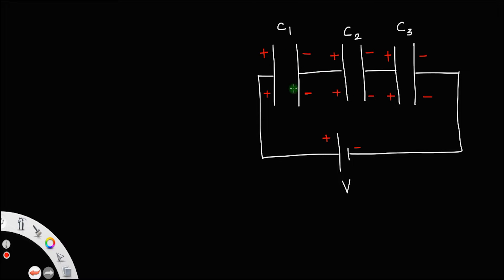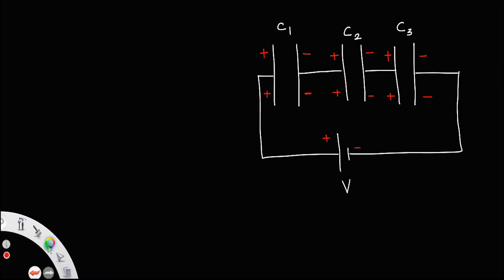This is called the series combination of capacitors because the negative plate is connected to the positive plate of the adjacent capacitor. This kind of combination is called the series combination. Also, you can see that all these capacitors have two units of positive charge, which means in a series combination, charge remains the same.